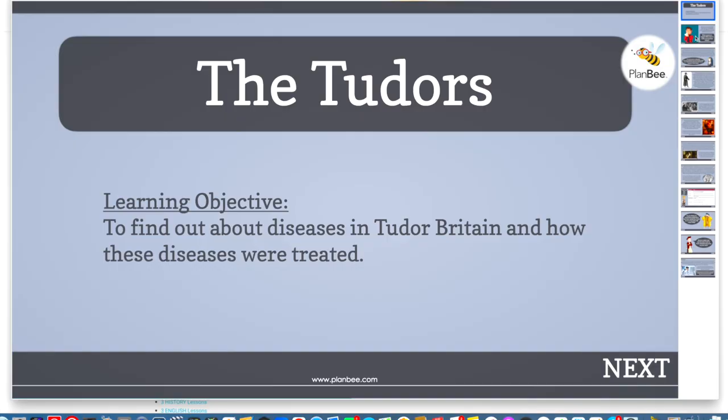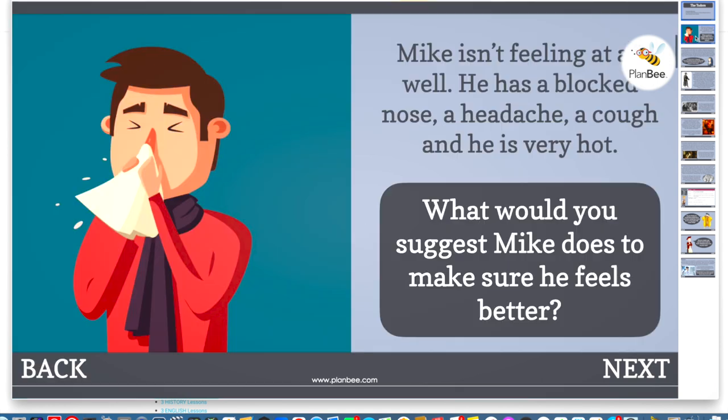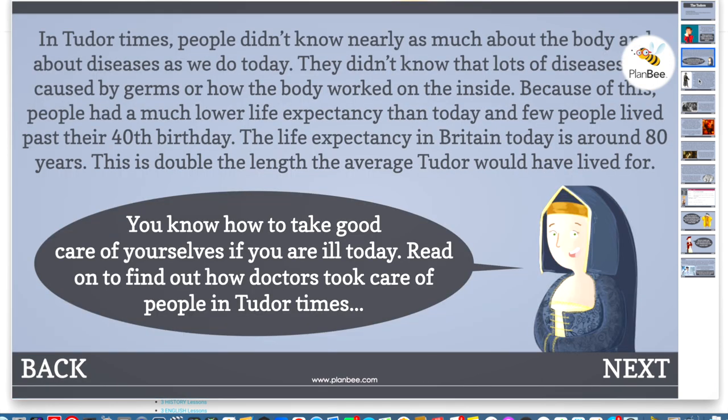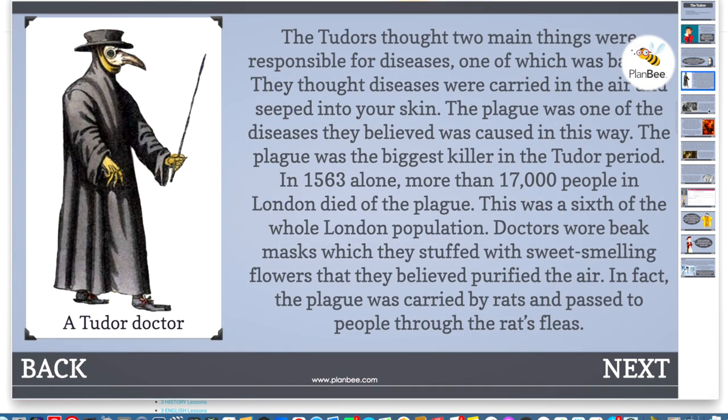We at Kew Riverside have found that Plan B supports our progression of skills across several topics. For example in history, you can see from our reception year one class right through to year six the progression of historical skills.